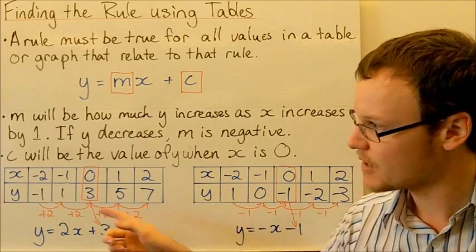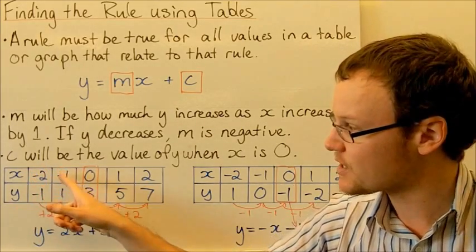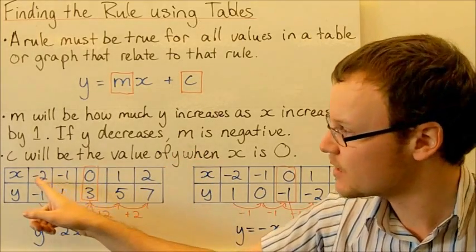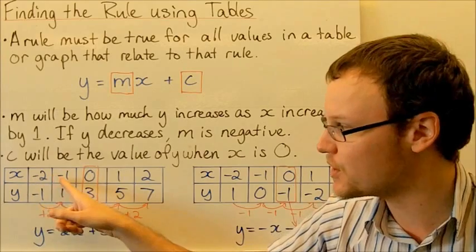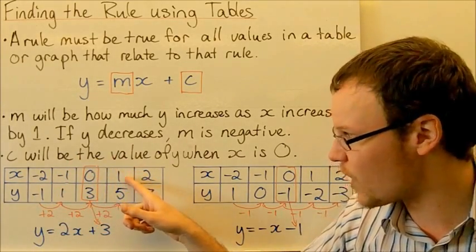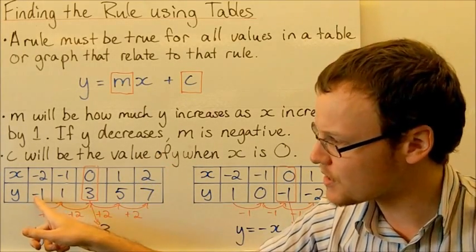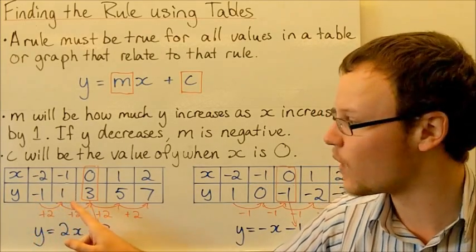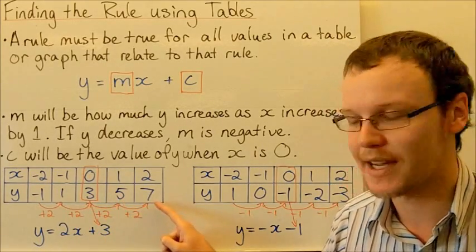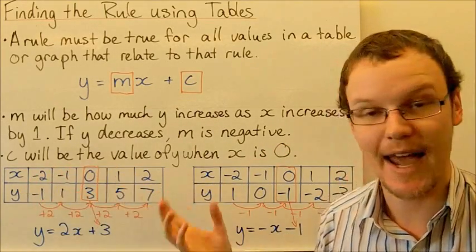So we've got a couple of examples. In this first example, x is increasing by 1 each time, which is good. We can look at how much y increases: it goes from negative 1 to 1, then 3, 5, 7 — so y is increasing by 2 every time we add 1 to x.